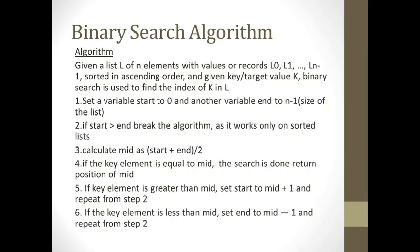So this is the algorithm students. Given a list of n elements with values or records L0, L1 to Ln-1 sorted in ascending order and given key target value K, binary search is used to find the index of K in L. The list is sorted in ascending order, we have to perform binary search, now I am going to tell you what is binary search.